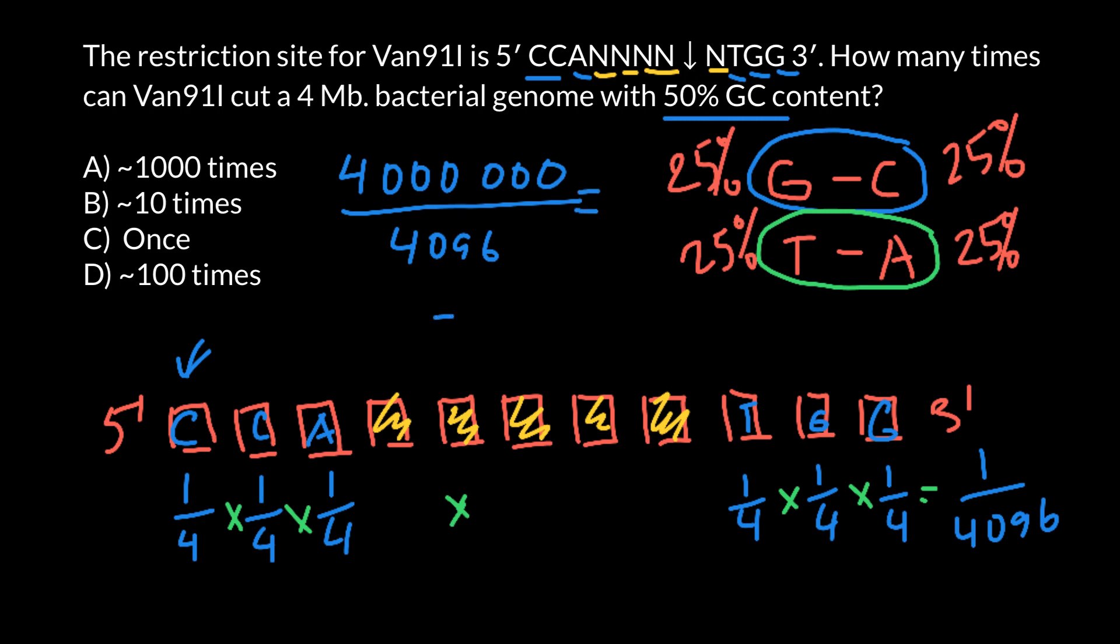But the best approximation would be one thousand times, and this is answer A. Why do we use an approximation sign here? Because this is a mathematical method for how we find how many places this restriction enzyme would cut double-stranded DNA. But it's not necessary that DNA would follow exactly